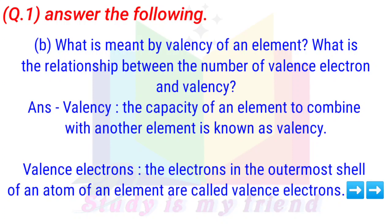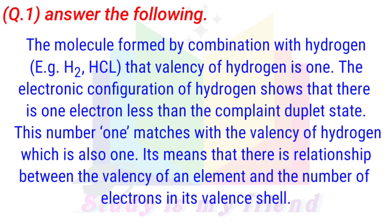What is meant by valency of an element, and what is the relationship between the number of valence electrons and valency? Valency: The capacity of an element to combine with another element is known as valency. Valence electrons: The electrons in the outermost shell of an atom are called valence electrons. The electronic configuration of hydrogen shows there is one electron less than the complete duplet state, matching its valency of 1. Thus, there is a relationship between the valency of an element and the number of electrons in its valence shell.